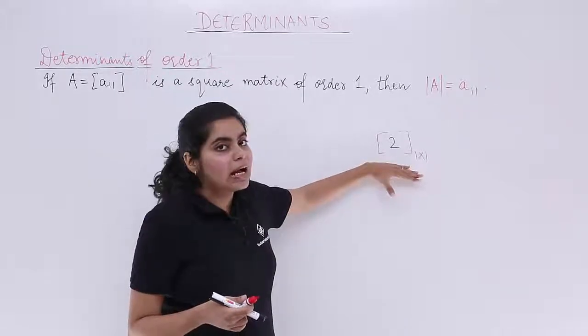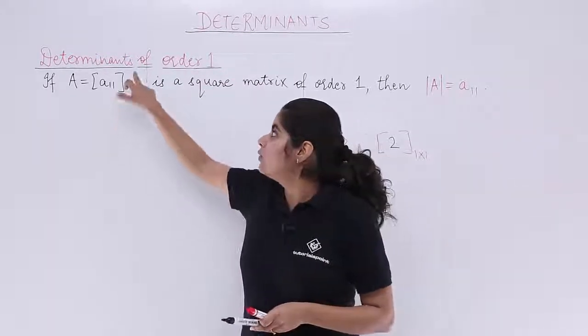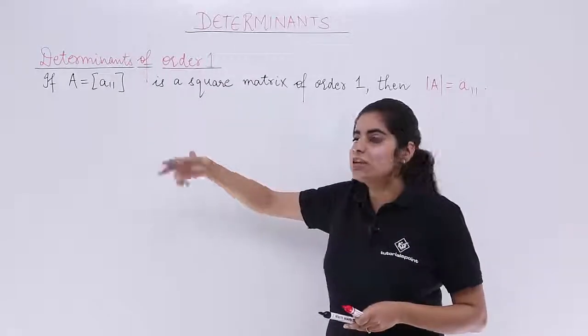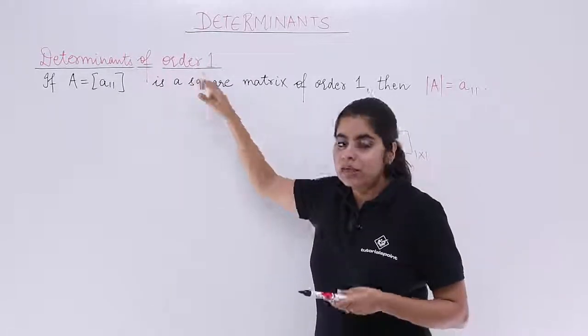So if the matrix is such and we have to find out the determinants of those kind of matrices with order 1, then what happens?